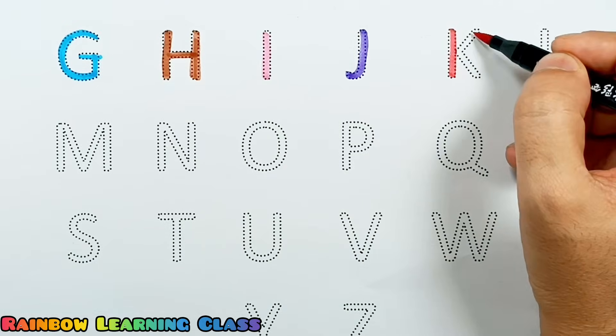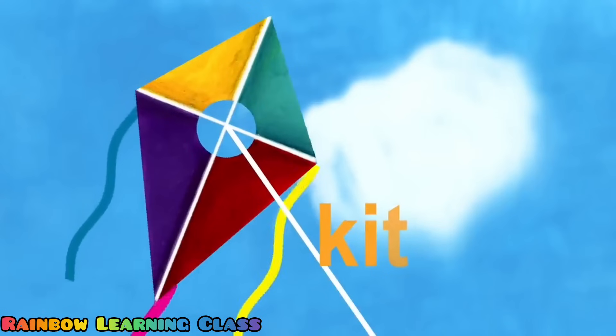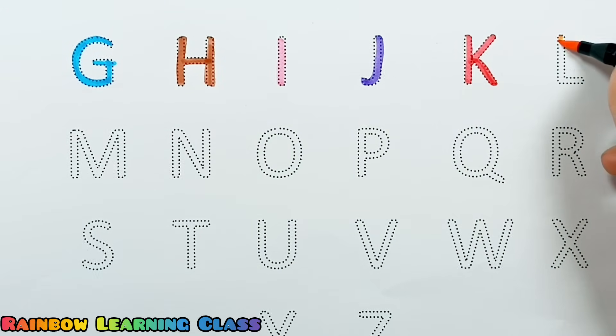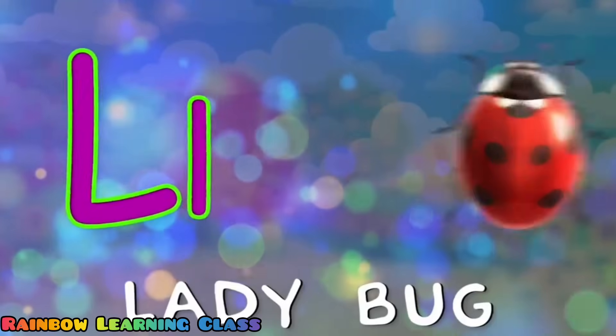Now I know my ABCs. K is for kite. Kite! Next time won't you sing with me. L is for ladybug.